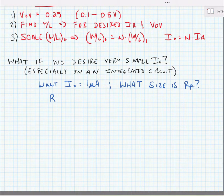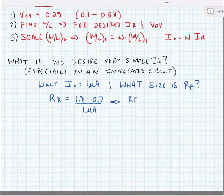So our reference resistor would be equal to 1.8 volts minus 0.7 volts, that would be the VGS, divided by 1 microamp. This would imply that the reference resistor would need to be on the order of 1.1 megaohms.